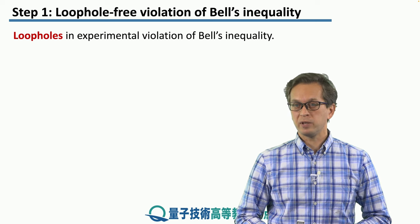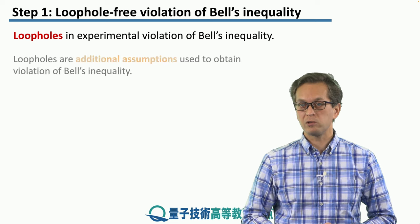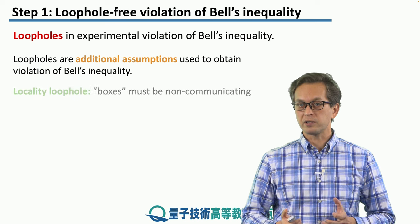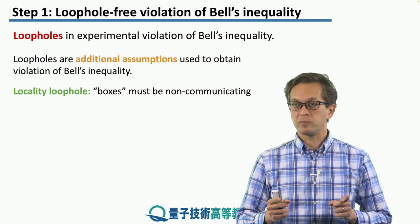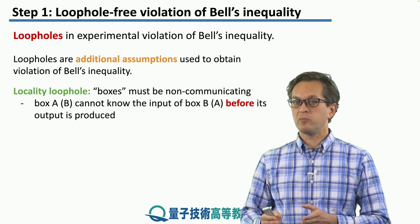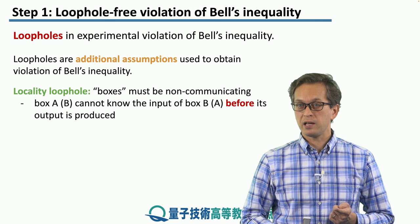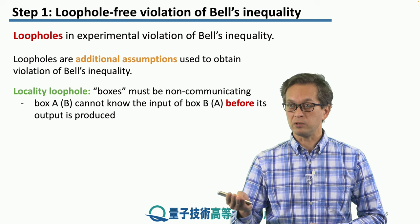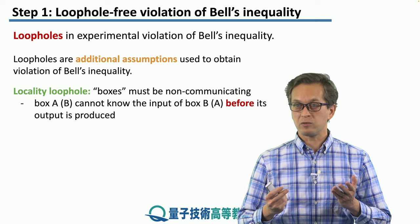In every experimental demonstration of Bell inequality violation, there were so-called loopholes. Loopholes are additional assumptions used to obtain violation of Bell inequality. An important example is the locality loophole, which means that the boxes must be assumed to be non-communicating. This is because box A cannot know the input of box B before its output is produced, and vice versa. If this is not true, box A can simply tell its input to box B, and then box B can produce its output based on the information about both inputs. In such a scenario, Bell inequality simply does not apply anymore.